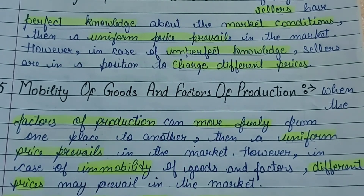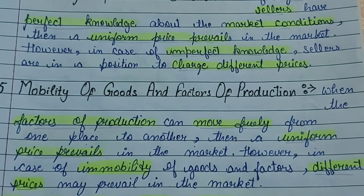So this is about market structure and the basis for classification of market। 5 basis हैं: number of buyers and sellers, nature of commodity, freedom of movement of firms, knowledge of market conditions, and mobility of goods and factors of production। Hope you guys liked the video — don't forget to like, share, and comment, and subscribe to my channel and hit the bell icon. See you in the next video, bye bye।